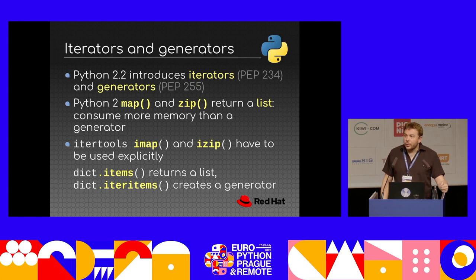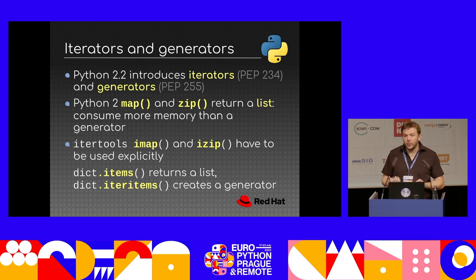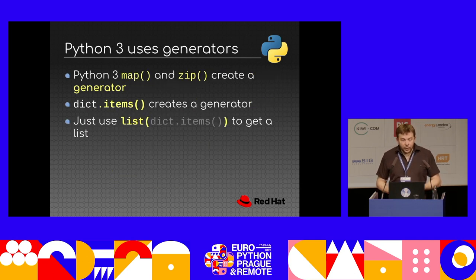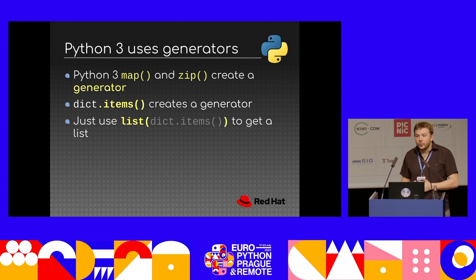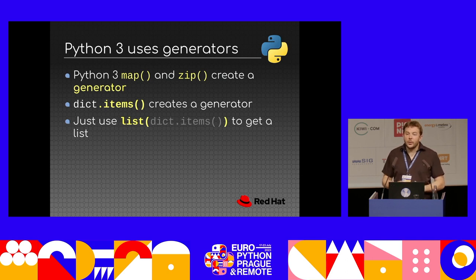Python is also a very old language, and we added features slowly, one by one. For example, in Python 2.2 we introduced iterators (PEP 234) and generators (PEP 255). The problem is that existing functions like the built-in map and zip returned a list. With a large dataset, that consumes a lot of memory just to create a temporary list you'd likely iterate over. So we introduced the itertools module with functions like imap and izip. We also added iter-items for dictionaries alongside the original items method. So in Python 3 we decided to move to generators by default: map, zip, and dict.items all return a generator. If you really want a list, you just cast the output to a list.